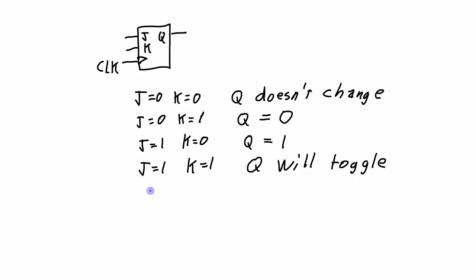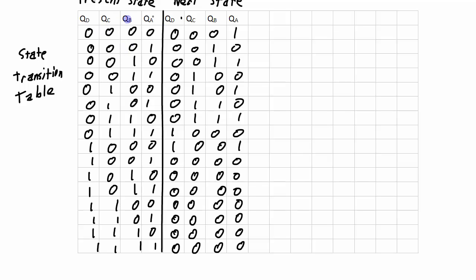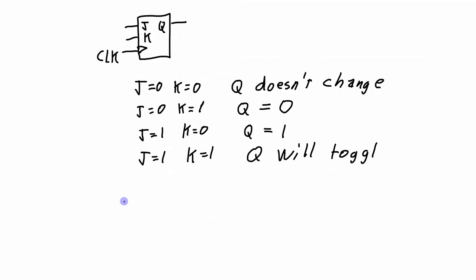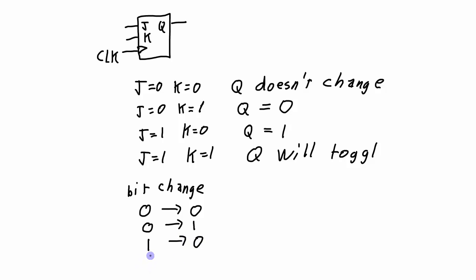Using this information about a JK flip-flop, we can build a flip-flop transition table to determine what values we need J and K to be in order to force the change in the Q values for each one of the flip-flops. Going from a present state to a next state, Q is either going to change values or keep the same value. There are four possible bit changes: a flip-flop could be 0 and remain 0, be 0 and change to 1, be 1 and change to 0, or be 1 and stay at 1. For each one of these combinations, what value does J need to be and what value does K need to be to cause this transition?